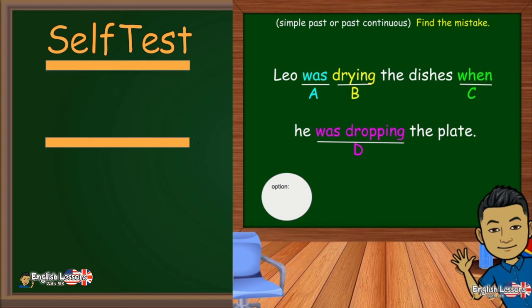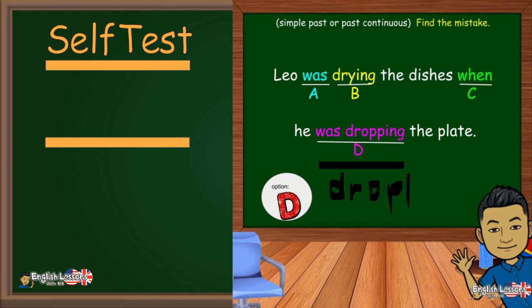Was dropping should be dropped because it refers to a completion of an action. Leo was drying the dishes when he dropped the plate.